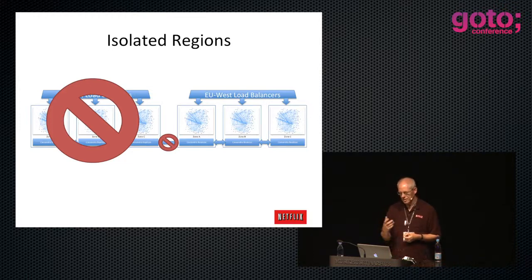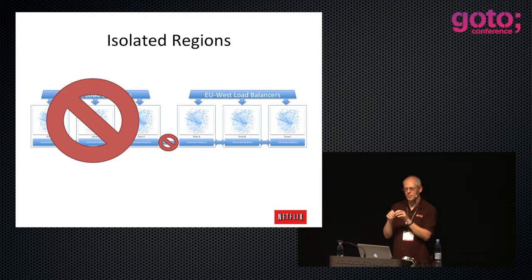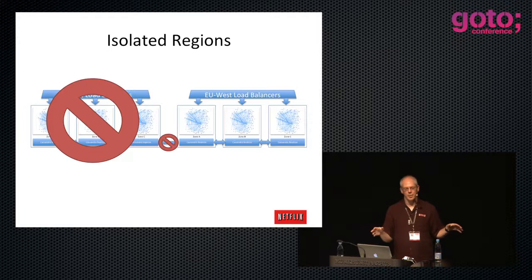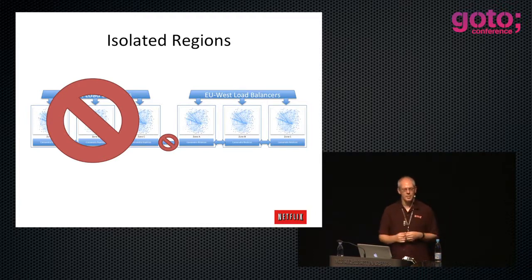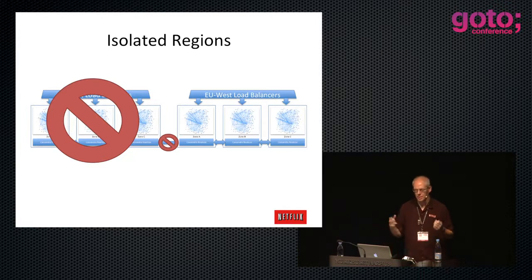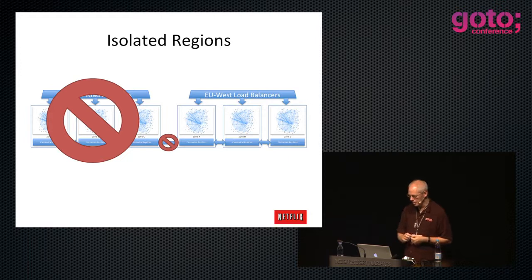If you sign up as a Netflix member in Europe, we write the data in Europe but it spreads to everywhere in the world. If you then visit America on vacation or a business trip, you can just use Netflix - you're already a member. It's a global membership model. There are members everywhere in the world, and you sign up once and you're done.